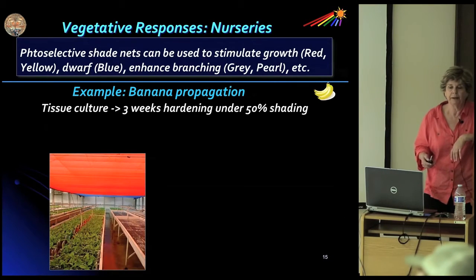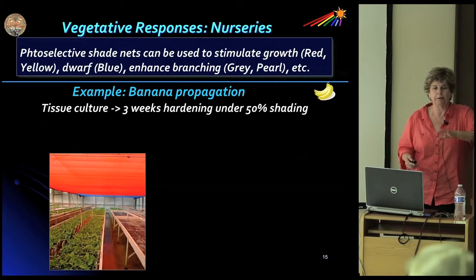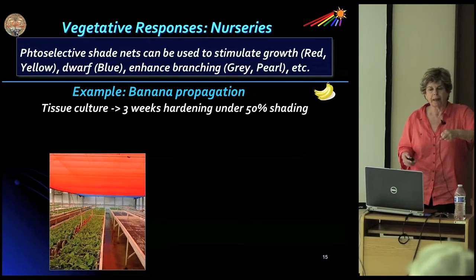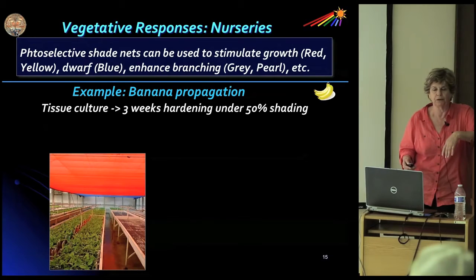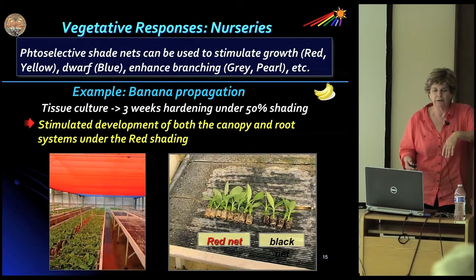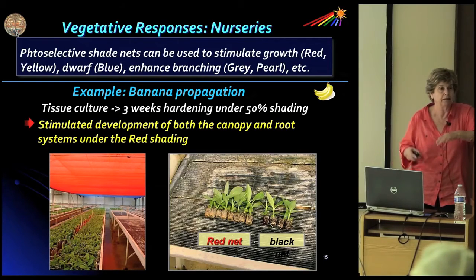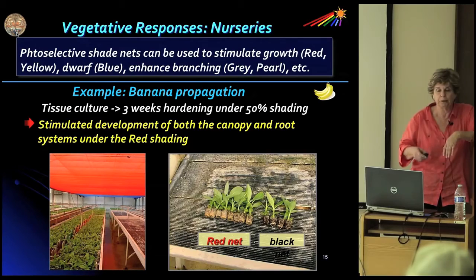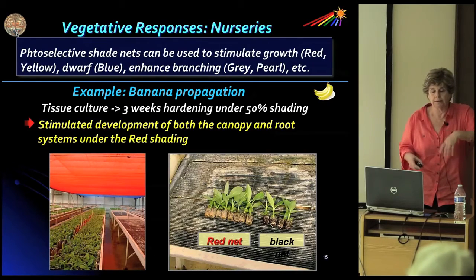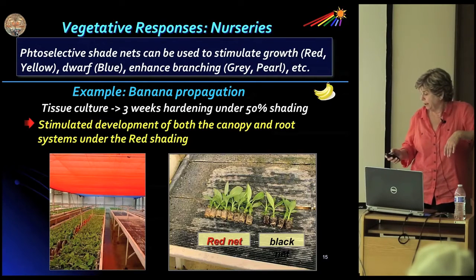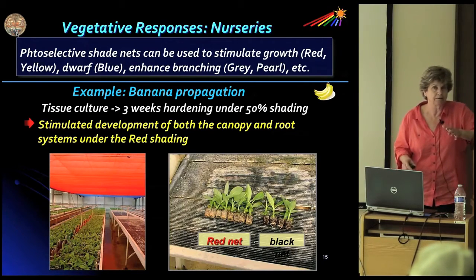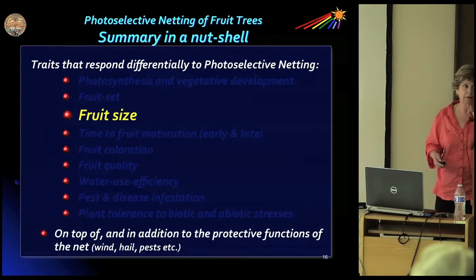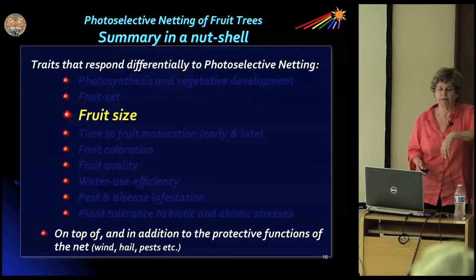Regarding vegetative responses in nursery, things go much faster. Banana plants propagated in tissue culture and moved for three weeks of hardening under 50% shading show clear differences under black versus red net, both at 50% shading. The canopy of plants from the red net is much larger, and the root system is far more developed. Sometimes the response is very fast — not the case in orchards, where we need more patience to see responses.